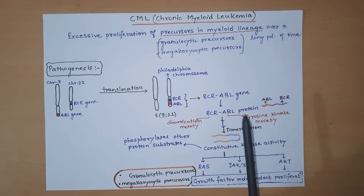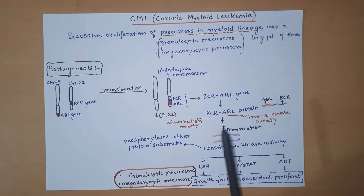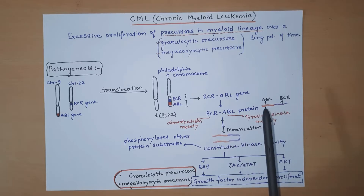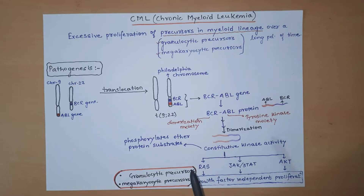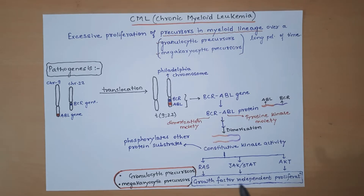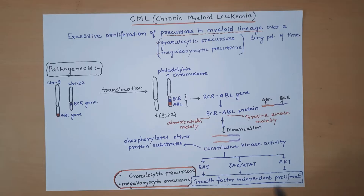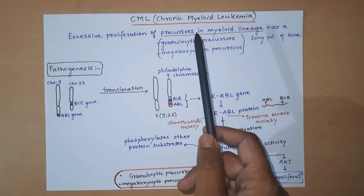These two parts perform their functions independently: the BCR part undergoes self-dimerization, and because of this self-dimerization the ABL part gets activated and performs constitutive kinase activity — that is, it continuously phosphorylates other protein substrates. This leads to activation of certain growth signaling pathways such as the RAS pathway, JAK-STAT pathway, or AKT pathway, which further leads to growth factor-independent proliferation in granulocytic and megakaryocytic precursors, causing chronic myeloid leukemia.